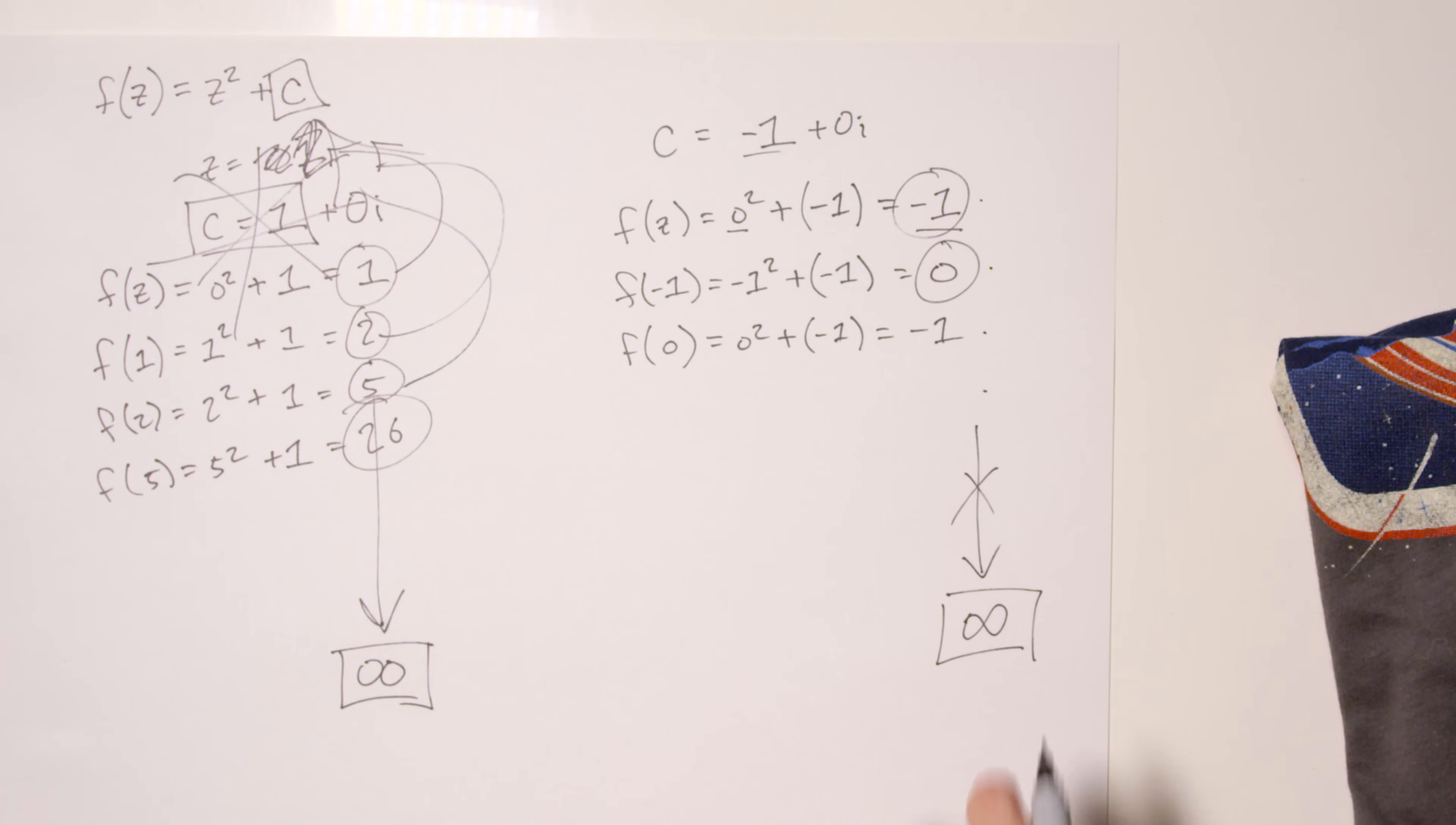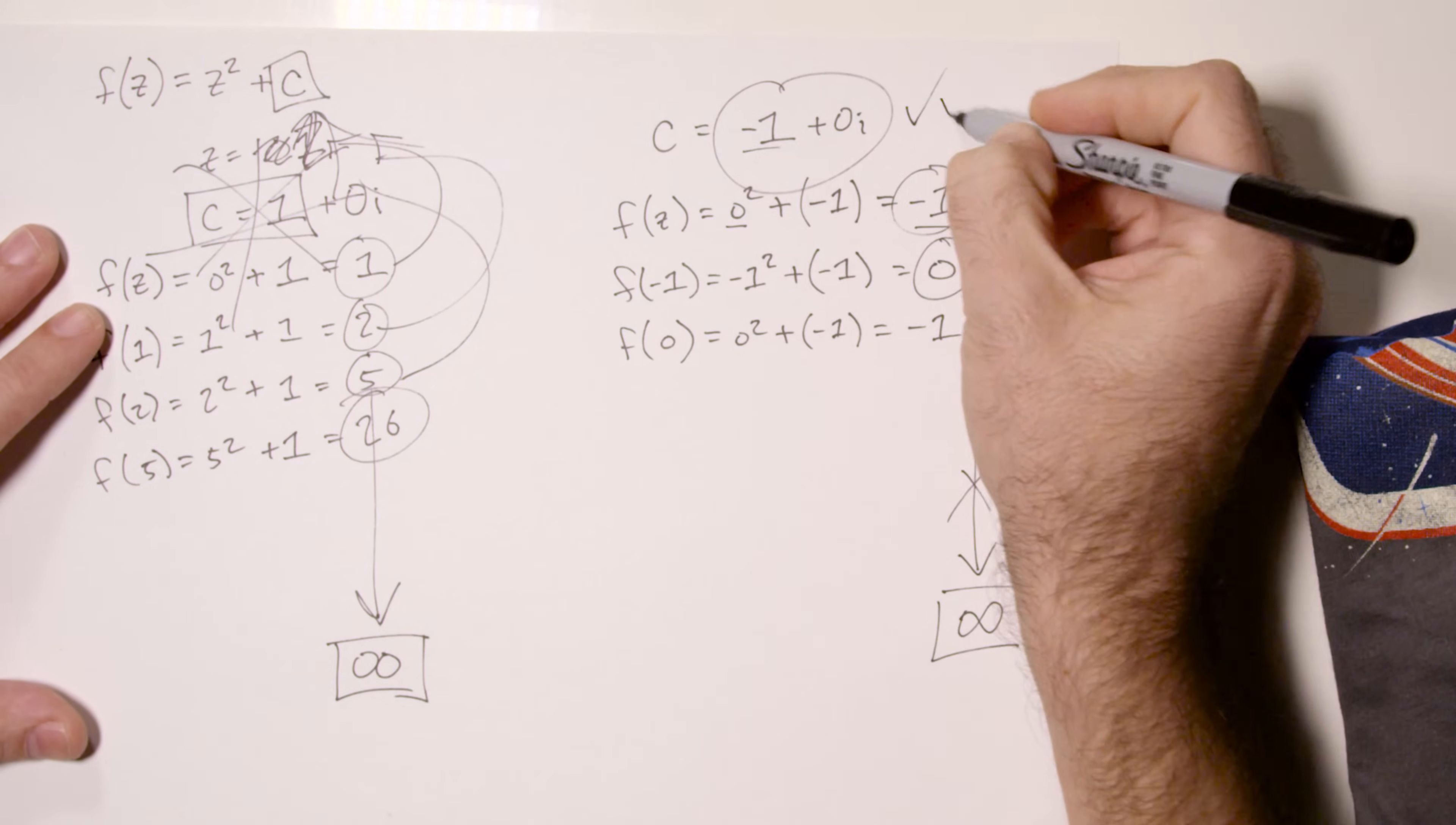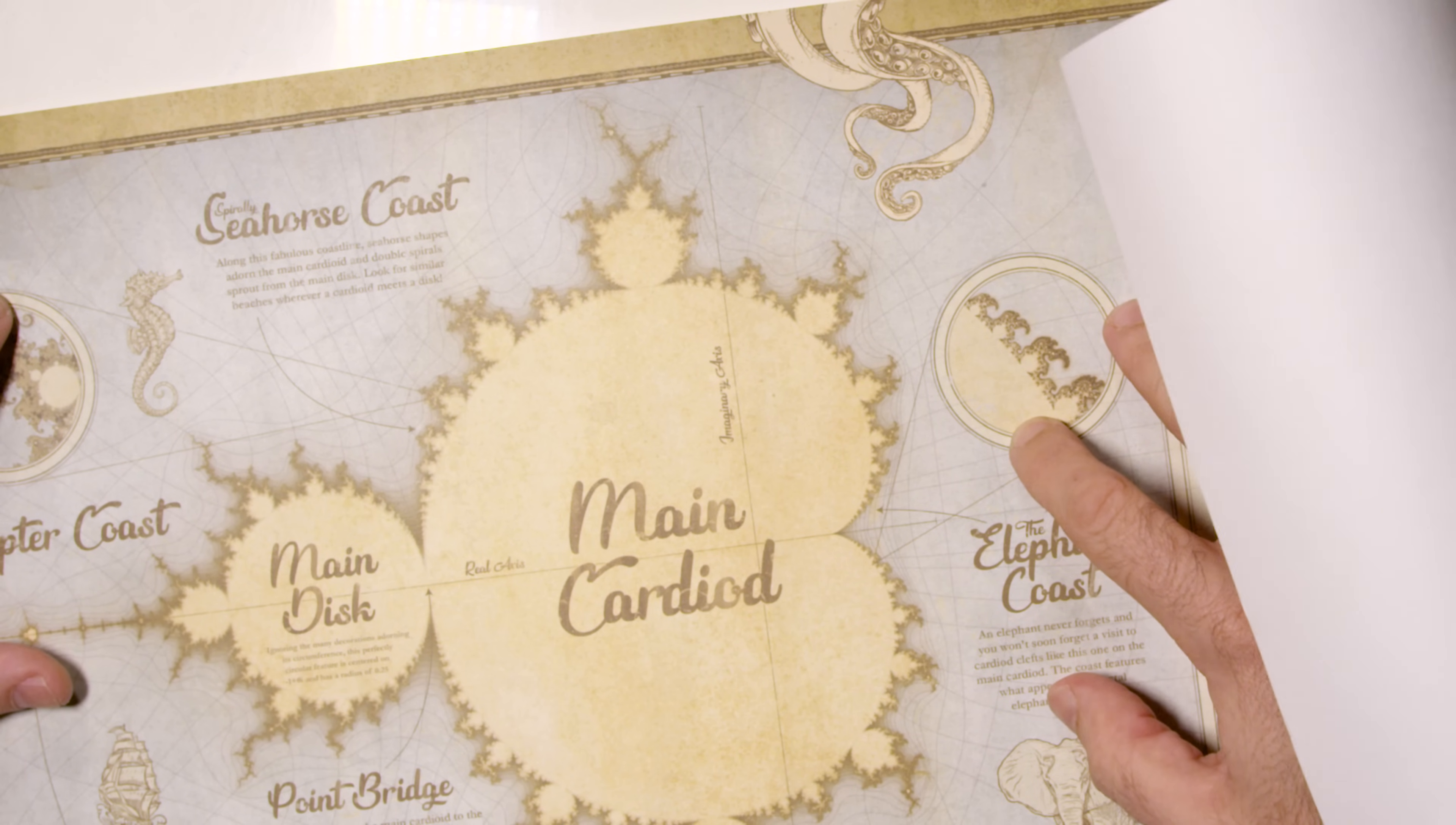So we can see that because at negative one this function does not grow without bound as we iterate, negative one is part of the Mandelbrot set. And sure enough, if we look on our little graph here, not graph, our map, negative one, which is actually the very center of the main disc here, that's certainly part of the Mandelbrot set.